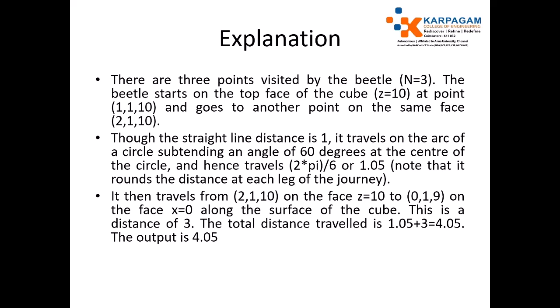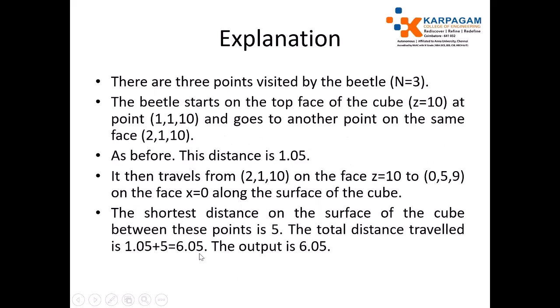The distance can be calculated — it is a straight surface distance. We do not use the Pythagorean theorem here because the beetle travels on the surface of the cube. The distance between the two data points: 2 minus 0 equals 2, and 10 minus 9 equals 1. Total distance is 3. So 1.05 plus 3 equals 4.05, but note this example continues differently.